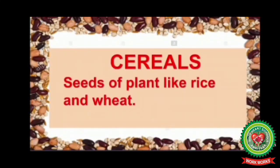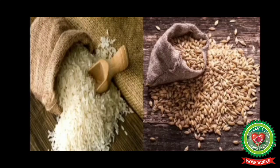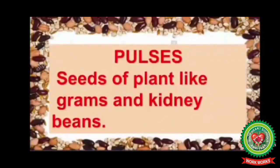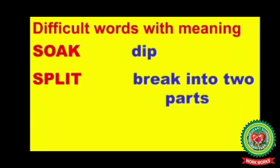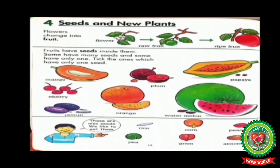Next term is cereals — seeds of plants like rice and wheat. Rice and wheat are cereals. Then pulses — seeds of plants like grams and kidney beans. Grams and kidney beans are examples of pulses. Now let's go through the difficult words of this chapter: soak, which means dip; and split, which means to break into two parts.